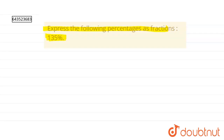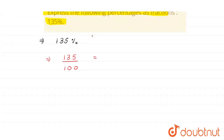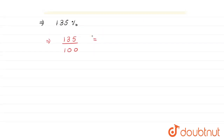So we can write 135 percentage as 135 divided by 100. Further we have to simplify this. So we simplify 135 divided by 100 by cutting this out by 5 — dividing both numerator and denominator by 5.